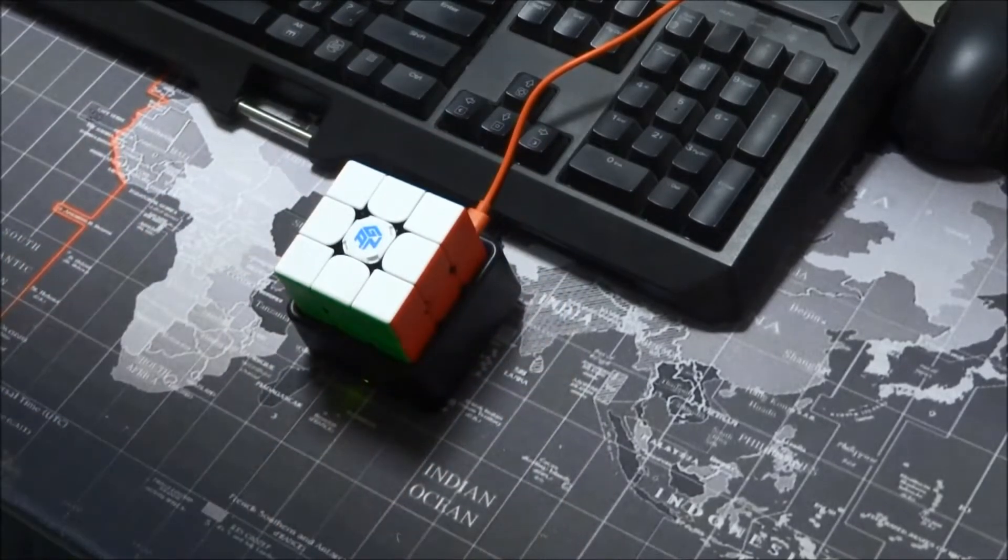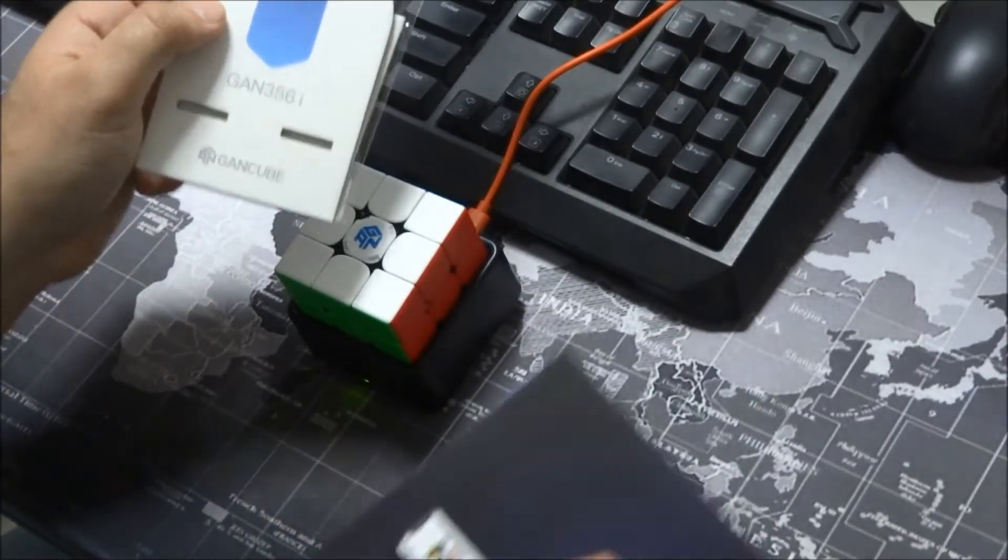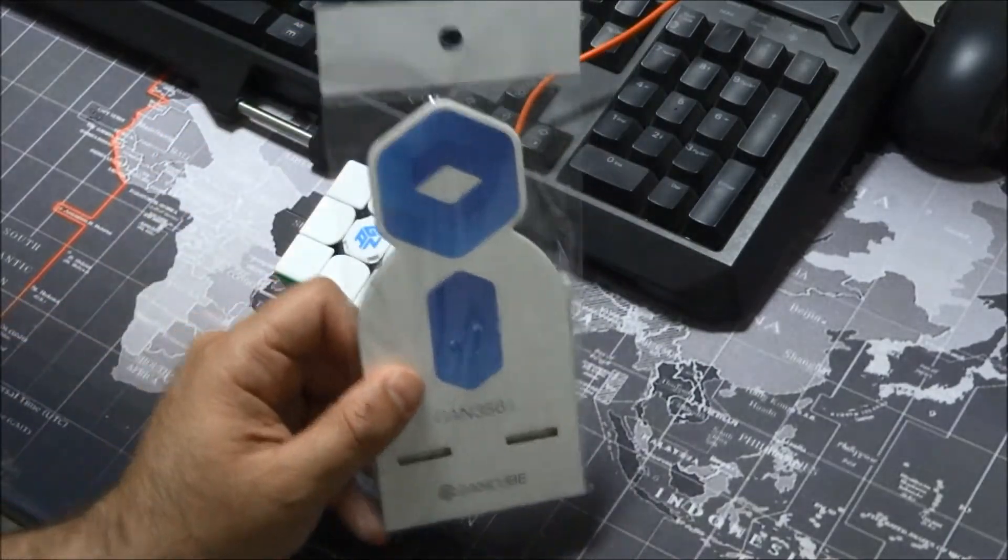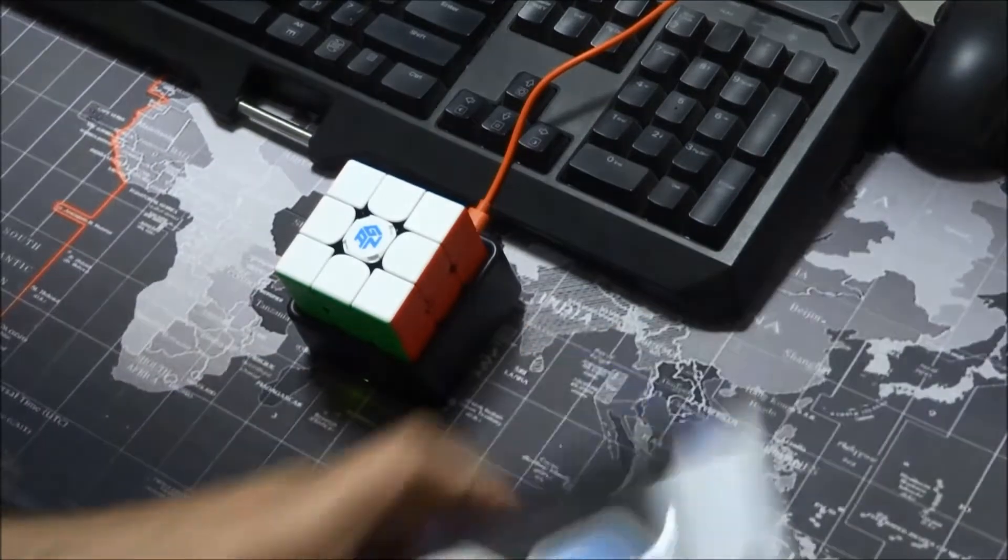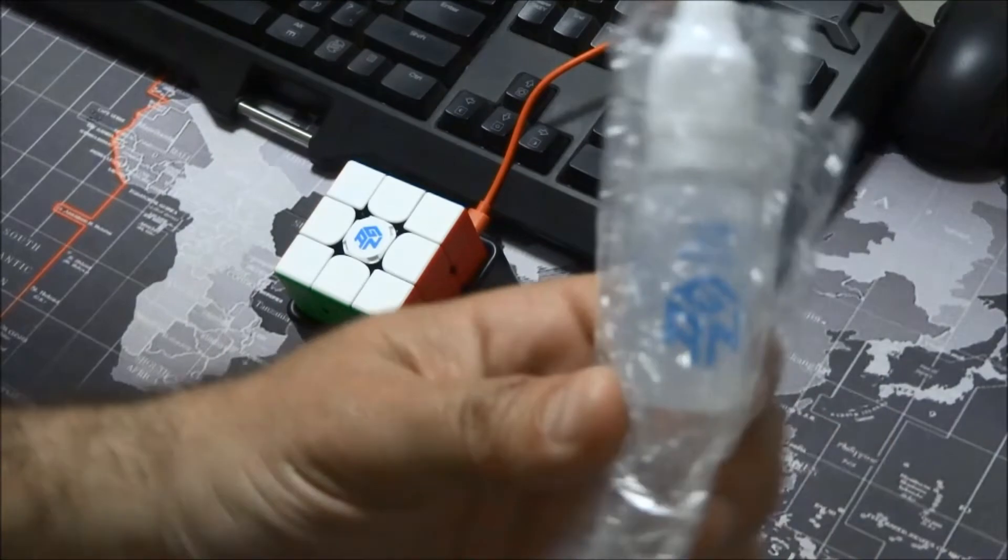In the box itself with the cube you get also this, supposed to be a stand for the cube and the phone, some postcards, and inside here you have the GANS loop.